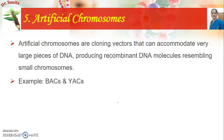The next type of vector is artificial chromosomes. Artificial chromosomes are cloning vectors that can accommodate very large pieces of DNA. Compared to plasmids, bacteriophages, phagemids, and cosmids, their DNA capacity is comparatively very large. Examples include bacterial artificial chromosomes (BACs) and yeast artificial chromosomes (YACs).